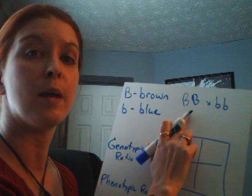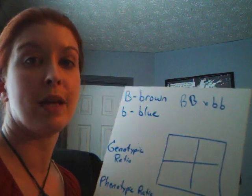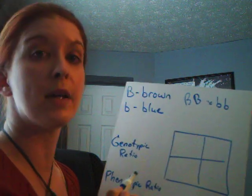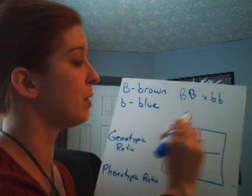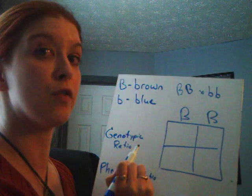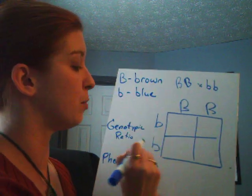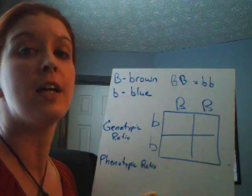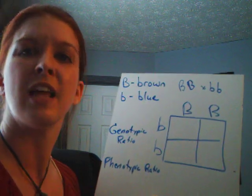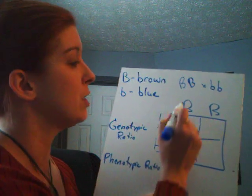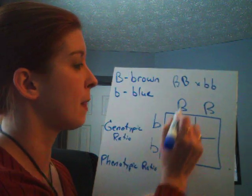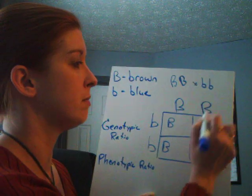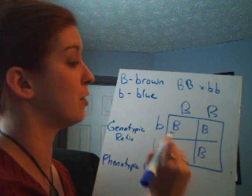So we have a brown-eyed individual and a blue-eyed individual that are going to be having babies. We're going to put the data up at the top and split up these alleles. We have big B, big B across the top, and on the side we have little b, little b. The way we do a Punnett square is you bring each letter down and fill in the boxes — kind of like a times table. So we take big B down, big B down.